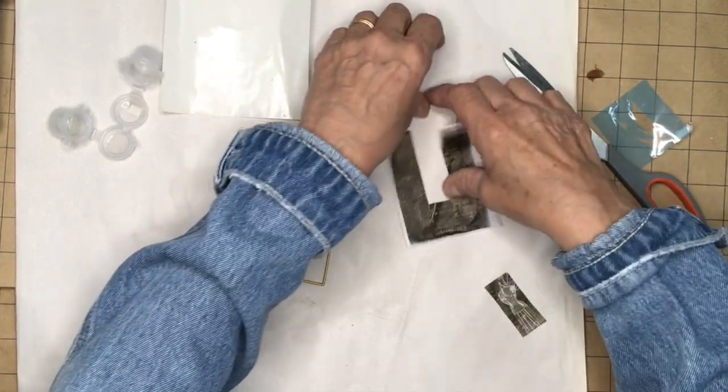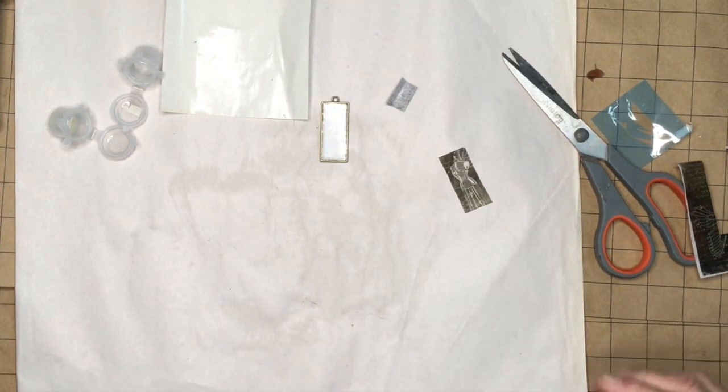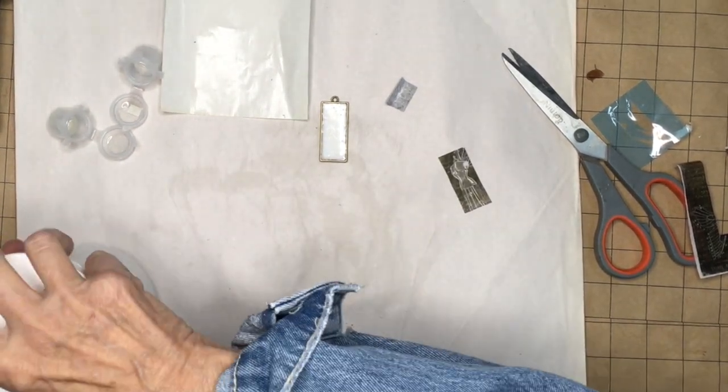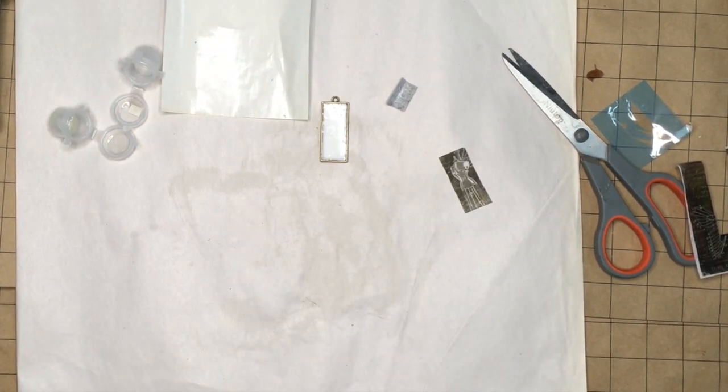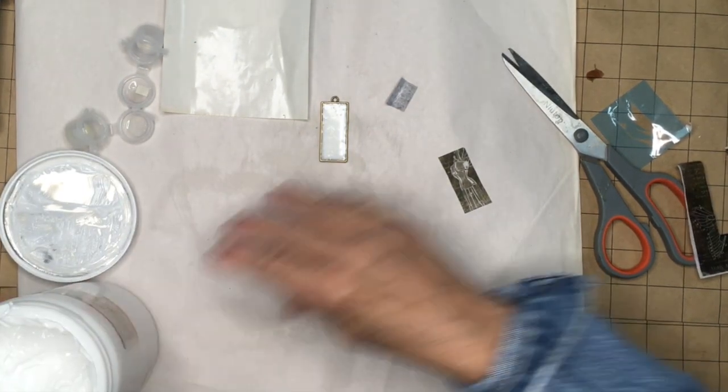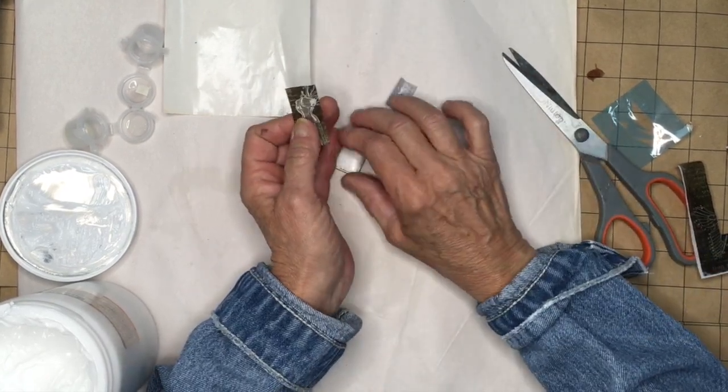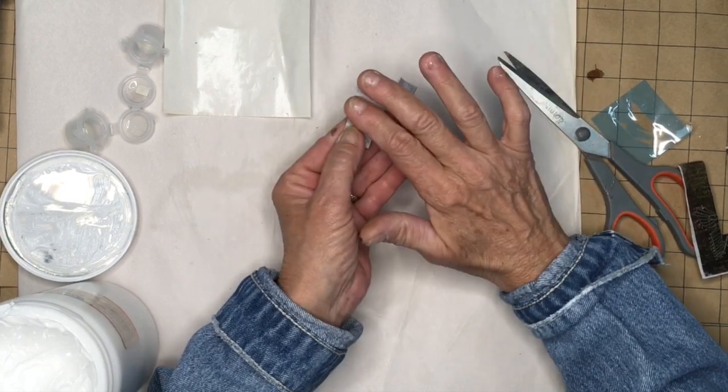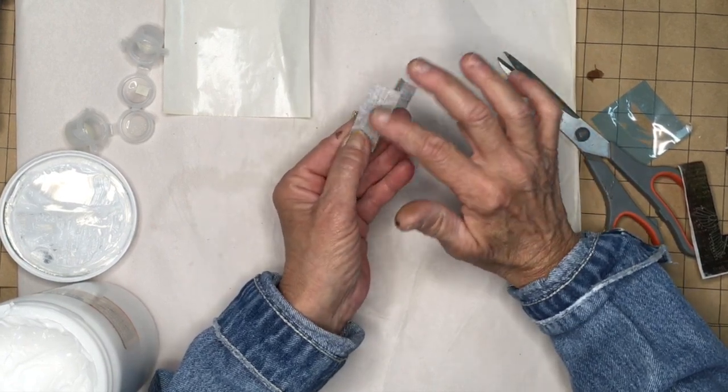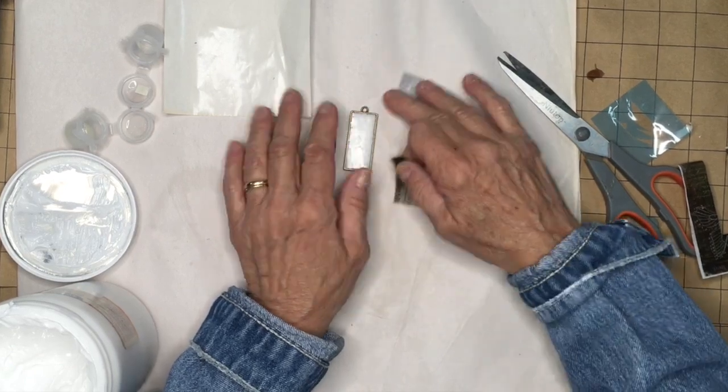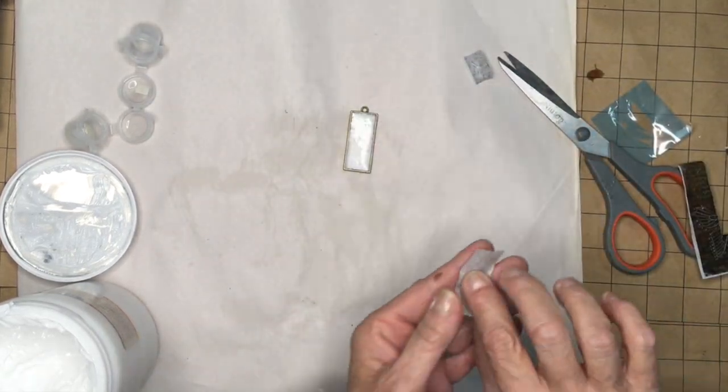So let's do that. We're gonna just get our decoupage medium. And whatever your favorite medium is you can use for this. When something is on tissue paper a lot of times you want to make sure you have a white background so it really shows up, or you paint the back with white very carefully. This happens to be white already so this isn't gonna affect us at all.